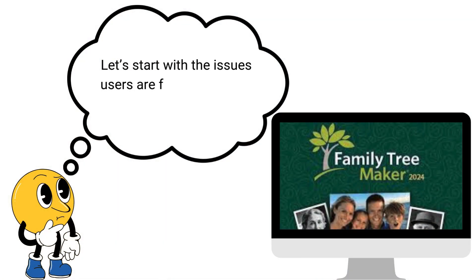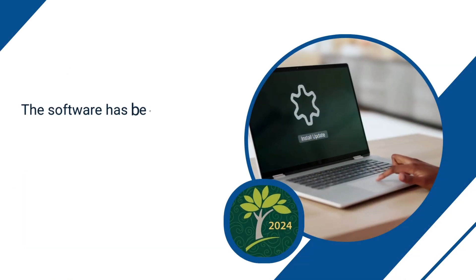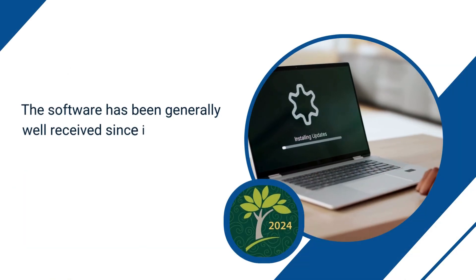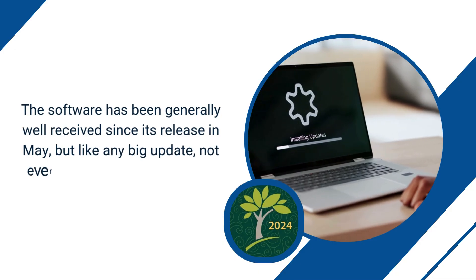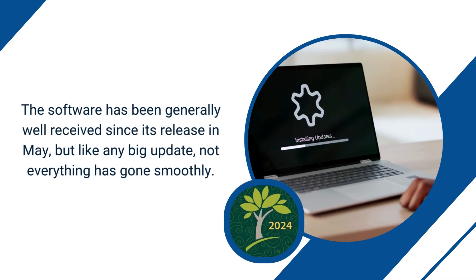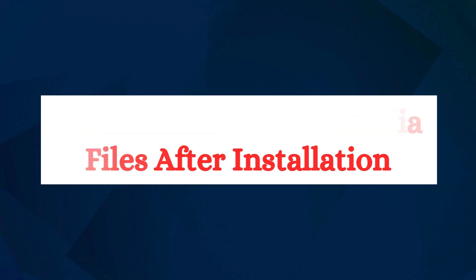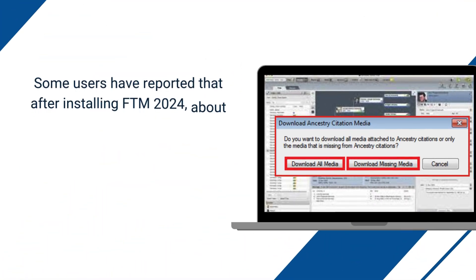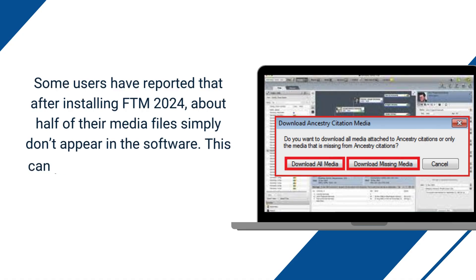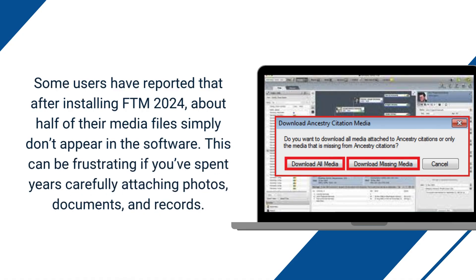Let's start with the issues users are facing in Family Tree Maker 2024. The software has been generally well received since its release in May, but like any big update, not everything has gone smoothly. Problem number one: missing media files after installation. Some users have reported that after installing FTM 2024, about half of their media files simply don't appear in the software. This can be frustrating if you've spent years carefully attaching photos, documents, and records.